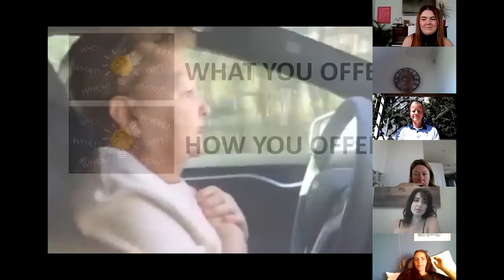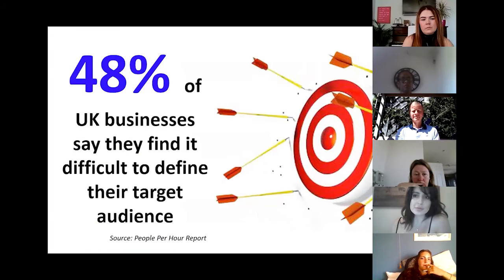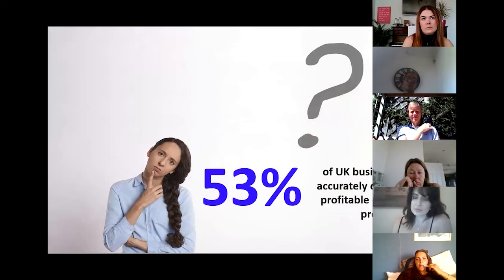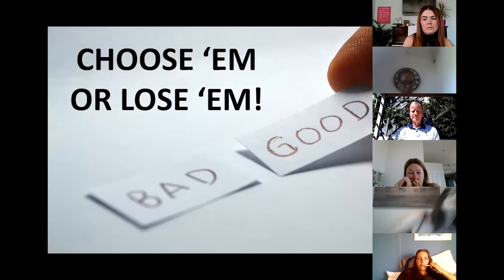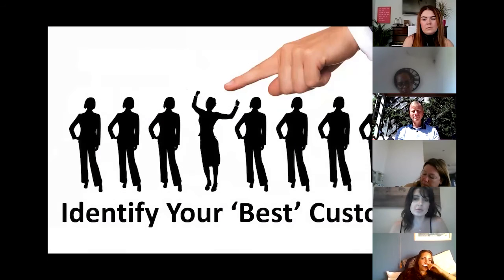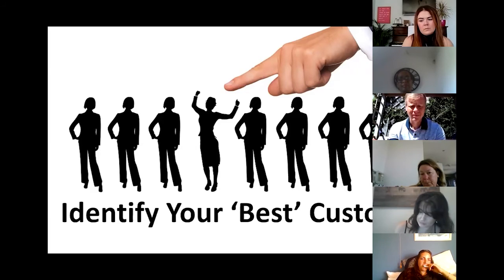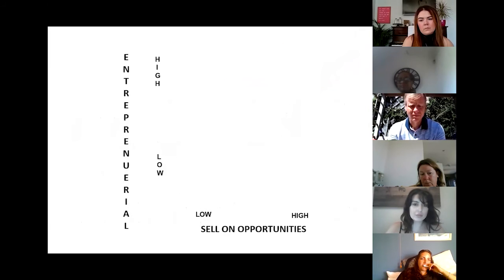It's about choosing the right customers, and that leads to the third element: who you offer things to. Before all this, nearly half of UK businesses said they find it difficult to define their target audience and don't know where their most profitable products or services come from. This is a great time to review that. 3D businesses 'choose them or lose them' — they focus on the customers they want to work with. In a seminar, sales guys listed their best customers saying 'they spend loads with us' — then the FD said 'yeah, but they never pay.'